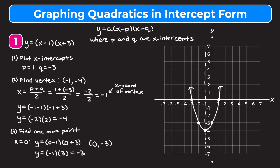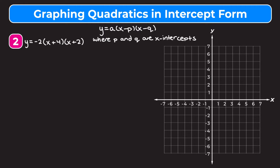Let's go through one more example. I encourage you to pause the video and try it on your own, then watch me work through it to check your answer. We have the quadratic y equals negative two times the quantity of x plus four times the quantity of x plus two. First, I'm going to plot the x-intercepts. Our p value is negative four and our q value is negative two, so our x-intercepts are negative four and negative two. Remember, the vertex and axis of symmetry are right in the middle of those two x-intercepts.